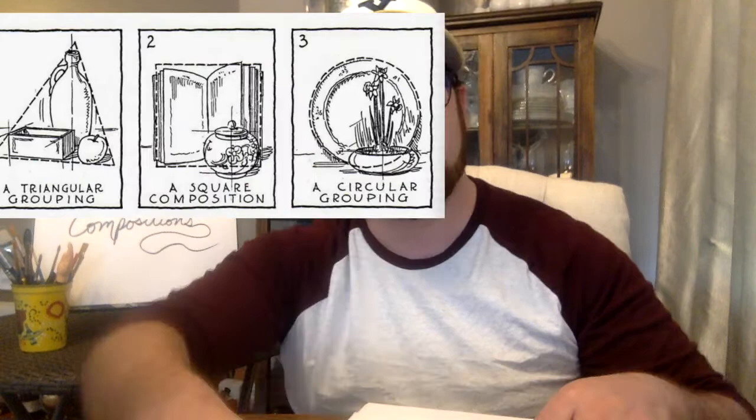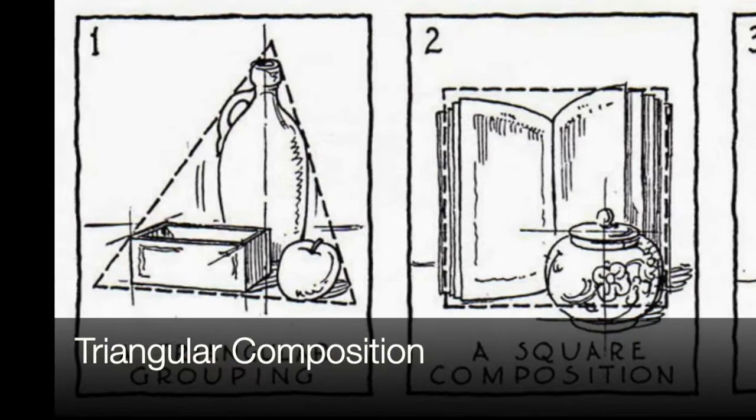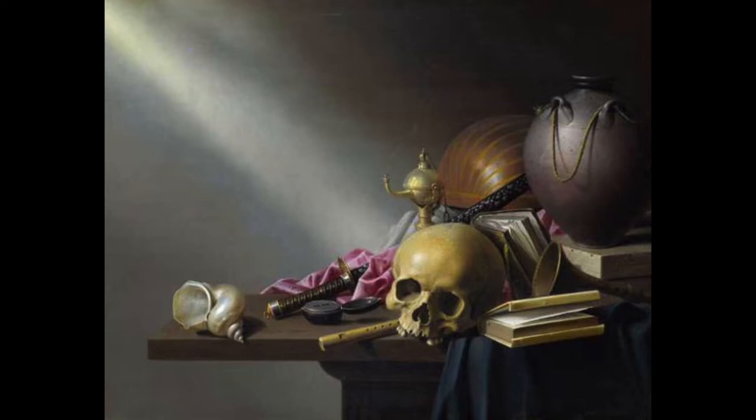Triangular composition is one of the most commonly used composition styles by artists. If you look at the examples, you can see how the objects sort of flow into one another, creating a triangular shape. This arrangement of objects creates a sense of weight and stability, and the viewer's eyes easily move throughout the shape.